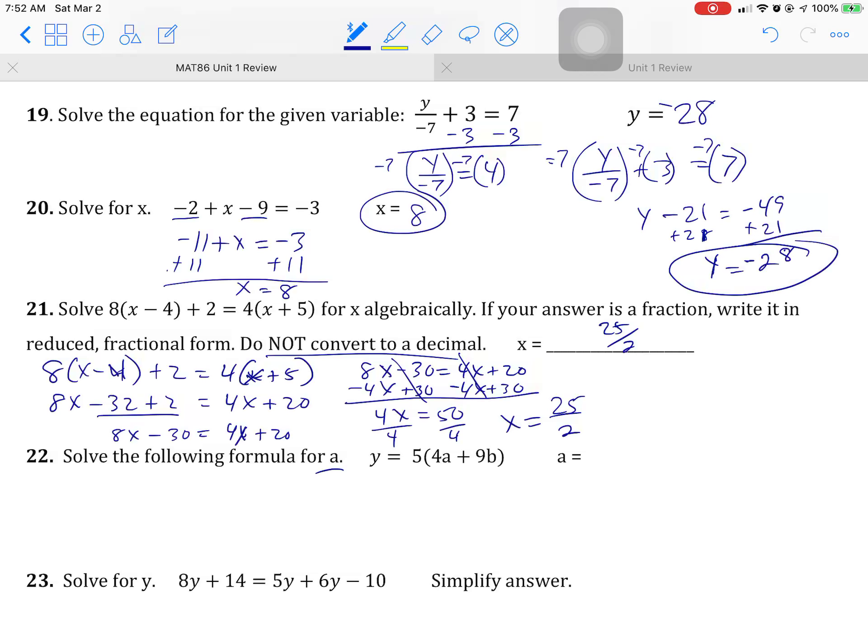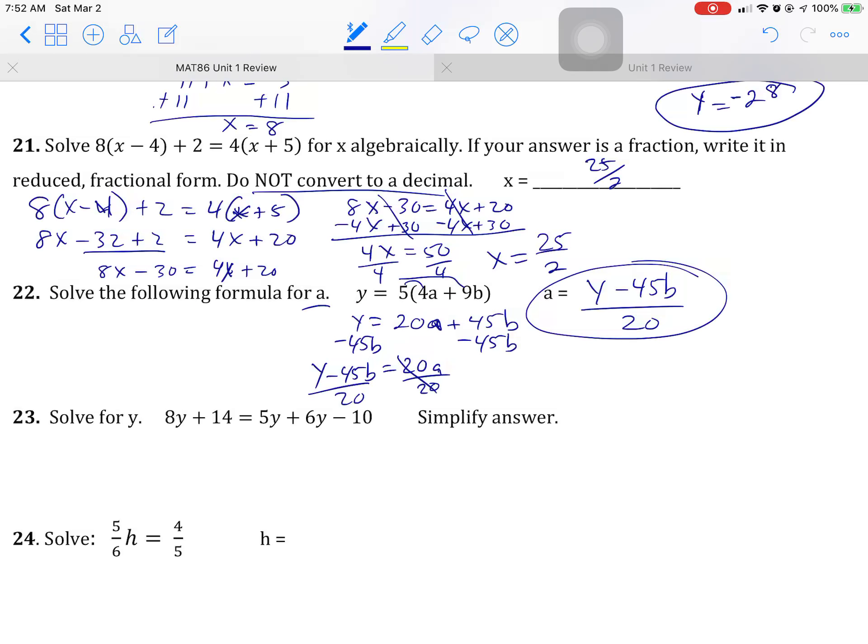Solve for A. A's in the parentheses. So I need to distribute to get it out. Now I need A alone on one side. So moving other things away from it. These are not like terms. We're not going to put them together. And get the A alone. So A equals Y minus 45B over 20. Or any combination of those, as long as the 45B is the negative part and Y is not negative.